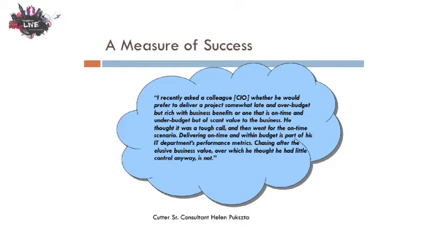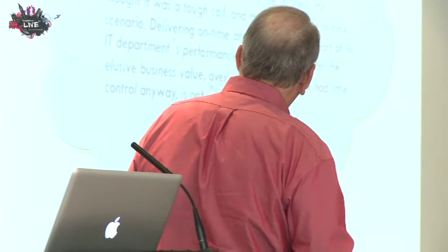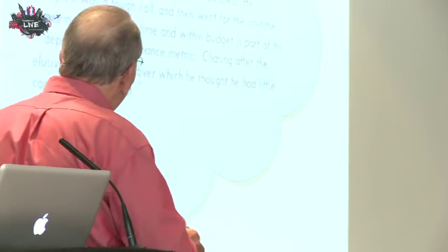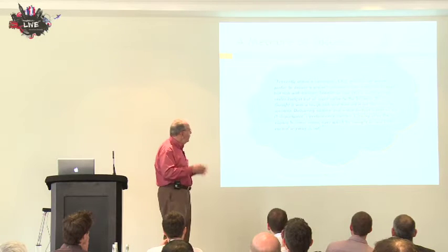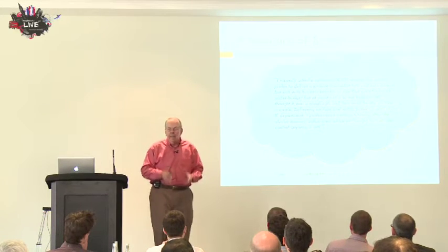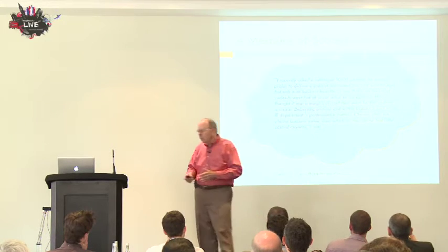Here's one of my favorite quotes. A senior consultant recently challenged a CIO whether he would prefer to deliver a project somewhat late and over budget but rich with business benefits, or one that is on time and under budget but of scant value to the business. He thought it was a tough call — and then went for the on-time scenario. Chasing business value over which he thought he had little control is not part of his IT performance metrics. And that's endemic in a lot of organizations all the way down to the project level.